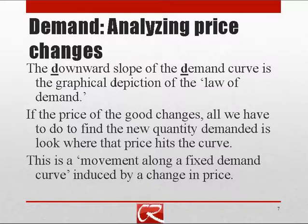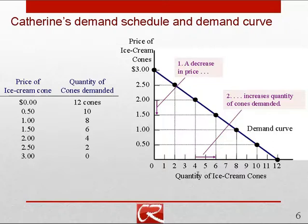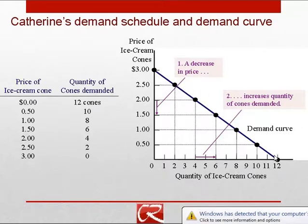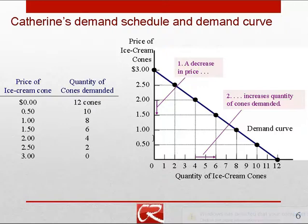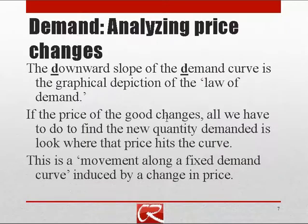The downward slope of the demand curve doesn't depict something that happens over time — students commonly think that way and say that if something has growing demand over time the curve should slope up. But remember, price is on the vertical axis and quantity demanded is on the horizontal axis. The downward slope shows an inverse or negative relationship: high prices are associated with low quantity demanded, and low prices are associated with high quantity demanded.